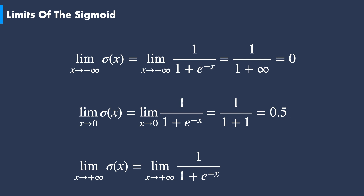Finally, when x takes large positive values, we know that the inverse exponential vanishes toward the value of 0. In this case, we end up with a ratio of 1 over 1, which is equal to 1. This means that the sigmoid function converges toward the value of 1 for large positive values of x. The three values 0, 0.5, and 1 are points of interest in the case of the sigmoid function.